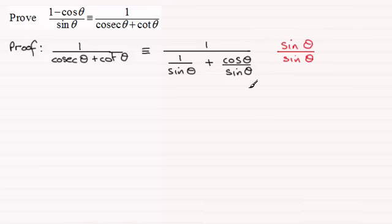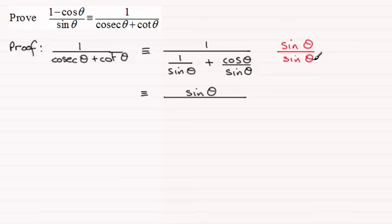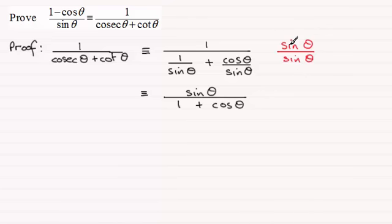Multiplying the top — the one — by sine theta gives me sine theta. Multiplying the two terms in the denominator by sine theta: one over sine theta times sine theta gives me just 1, and cosine theta over sine theta times sine theta — the sine thetas cancel — leaves me with cosine theta. So the fraction simplifies to sine theta over 1 plus cosine theta. This idea of multiplying top and bottom by some value is quite common in identities.